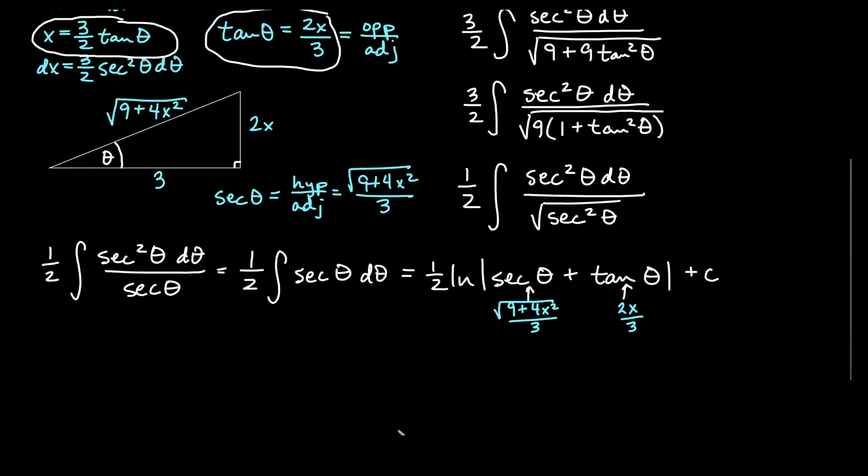So we have the square root of 9 plus 4x squared over 3 going in for secant. Since both things are over 3 in my ln, I'll combine and say the square root of 9 plus 4x squared plus 2x, all of that over 3 for my solution.